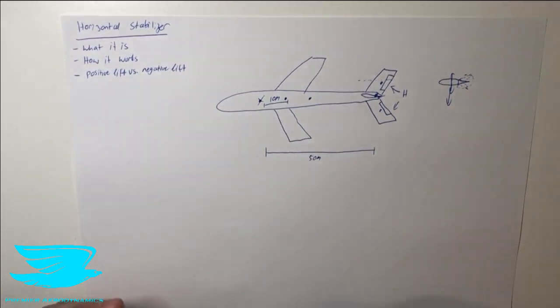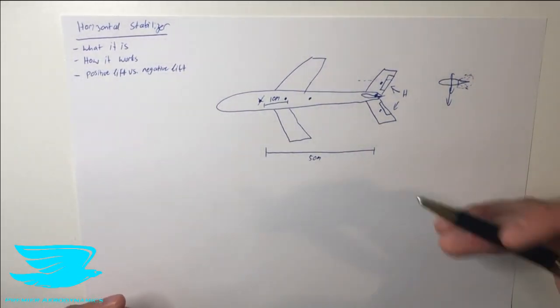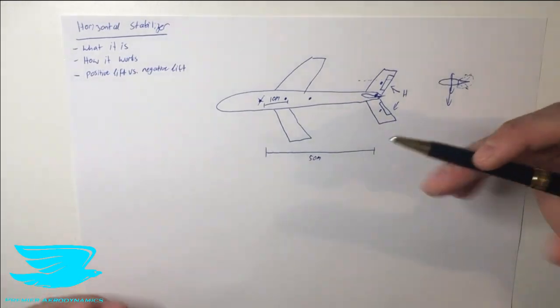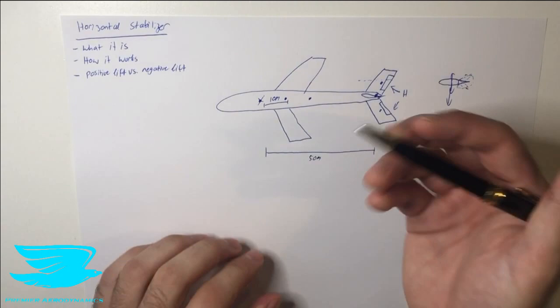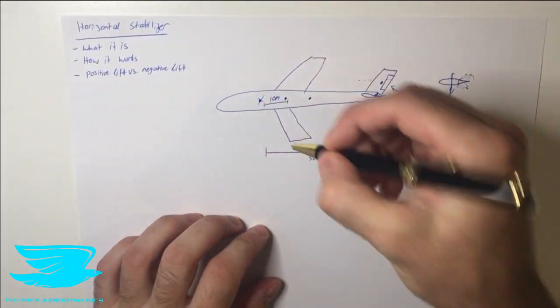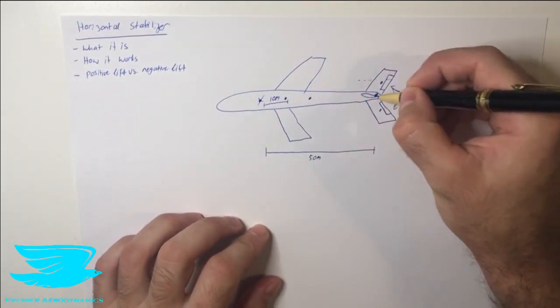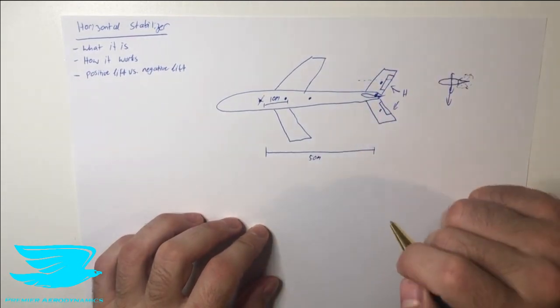So that's why we have positive lift versus negative lift coming into play. And that's why a horizontal stabilizer doesn't really act exactly as we might expect a lot of the time, but it all makes sense once you think about the pitching moments and the distances between the point at which the aircraft pitches about and the resultant lift from the wings and then the resultant lift from the horizontal stabilizers.